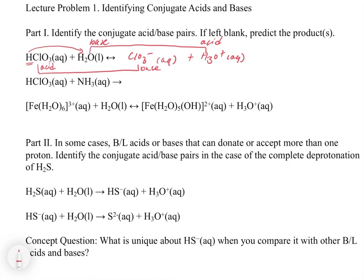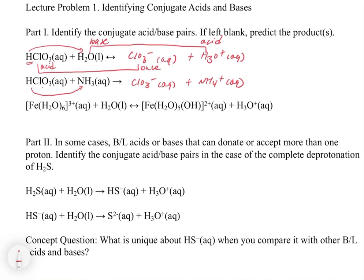Now let's look at the example with HClO3 and ammonia. We have HClO3, which is an acid, and ammonia, which is a base. Again, we're going to have a transfer of a proton from the HClO3 to the ammonia, giving us ClO3-(aq) and NH4+(aq). If you're struggling to figure out how these products are determined, go back and review chapter 4. I'm using that knowledge and now extending it to understand which one is the acid and which one is the conjugate base. In the conjugate acid-base pairs: HClO3 acts as the acid and ClO3- acts as its conjugate base; ammonia acts as a base and ammonium acts as its conjugate acid.